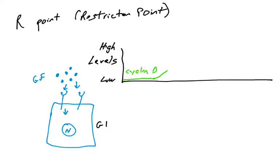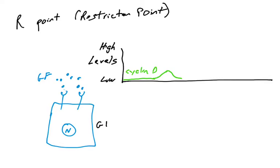Cyclin D levels have to reach a certain point in order to commit the cell into the cell cycle. Before that point, cells are still in G1. If growth factors go away or aren't around in a high enough concentration or for a long enough time, cyclin D levels can go back down — cyclin D can be destroyed by ubiquitylation. So cells are not going into S phase yet because cyclin D has to build up to a certain level to allow for a change in RB activity.